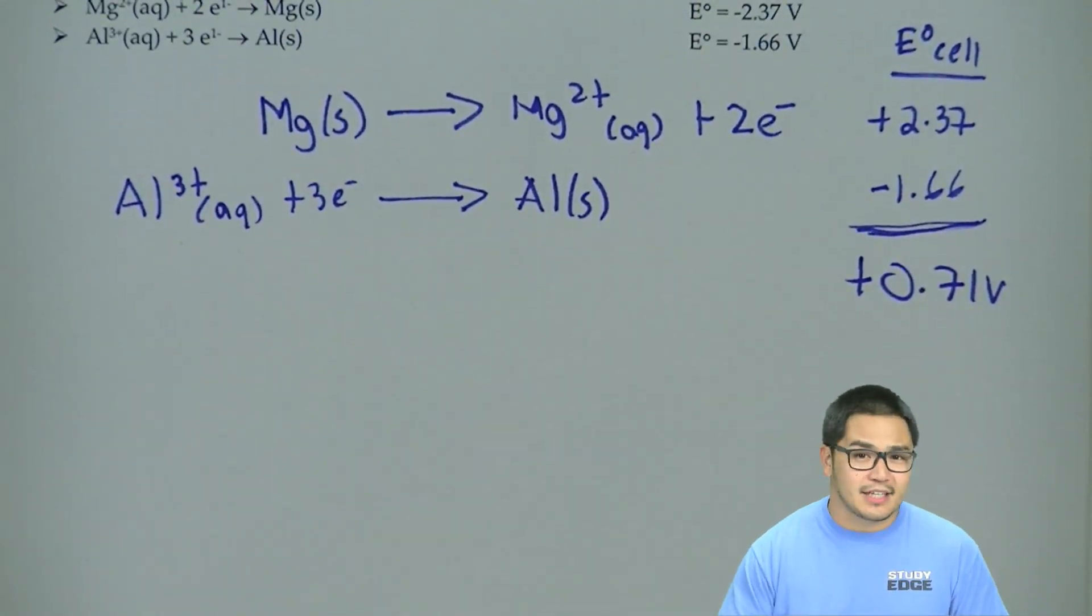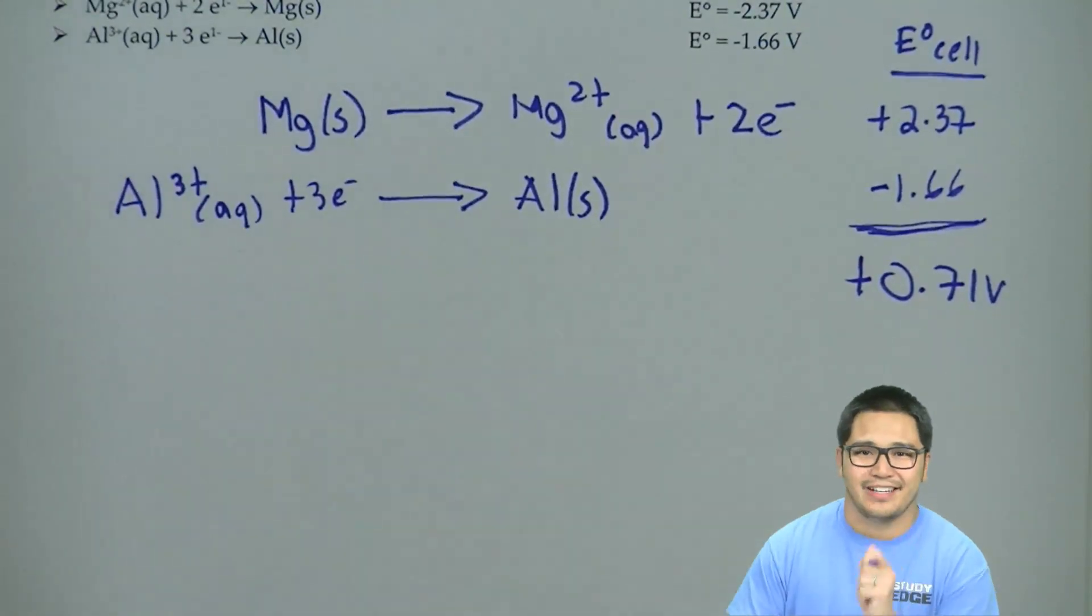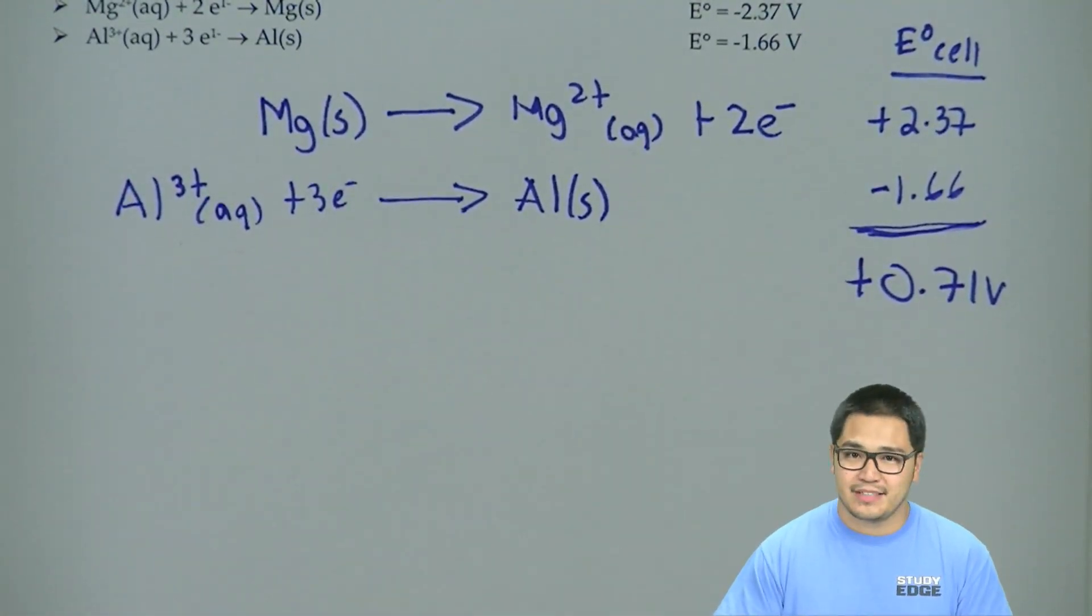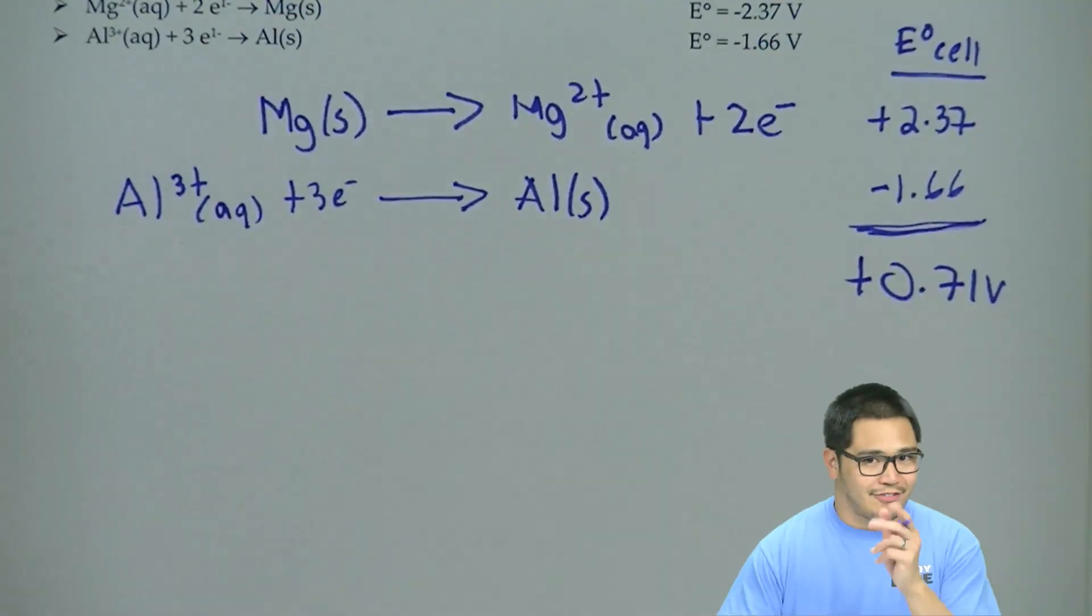And you can see it's positive, so that tells you it's spontaneous. A positive E-naught cell is always spontaneous. They also call it volts.